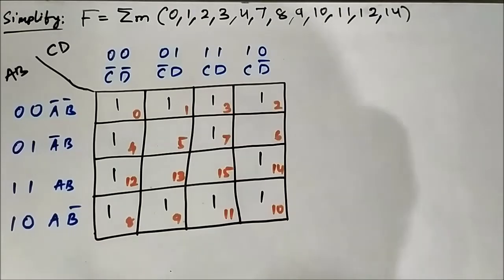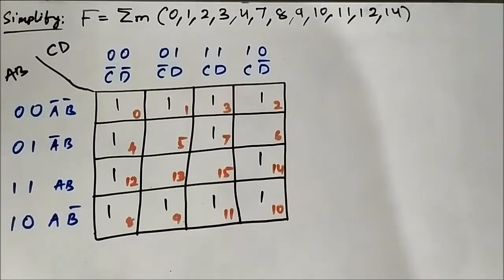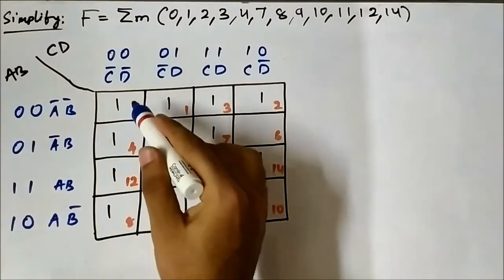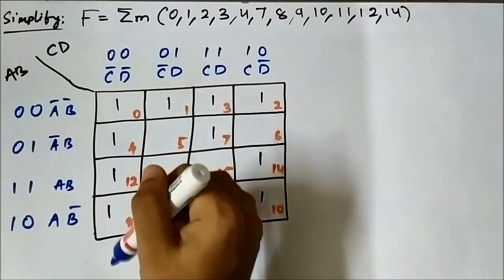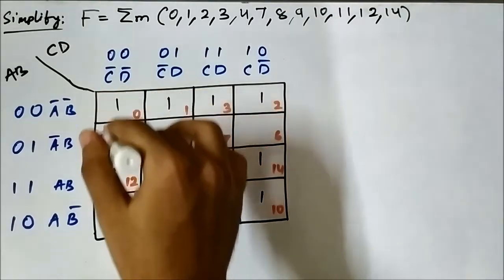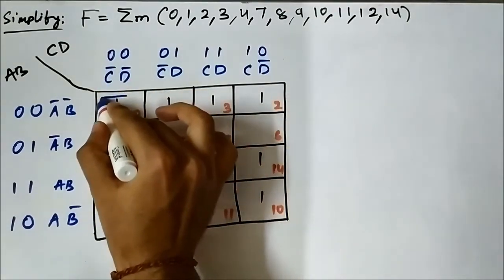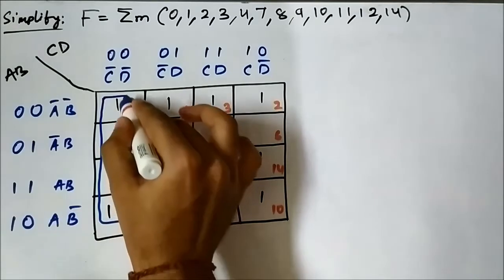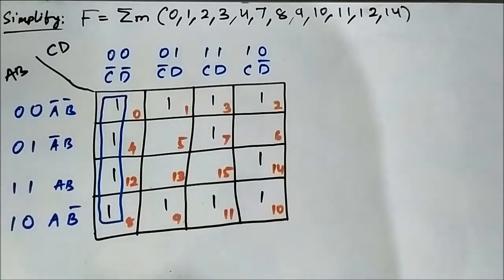Now we have to form the groups as per the rules of group formation. Pay attention to cells 0, 4, 12, and 8. They are adjacent, these 4 cells, so we can group them together to form a quad.